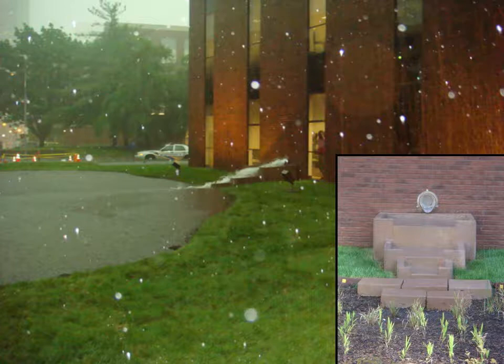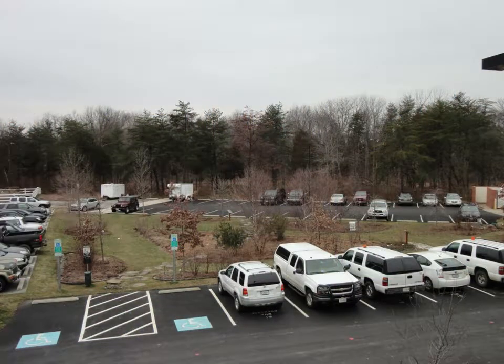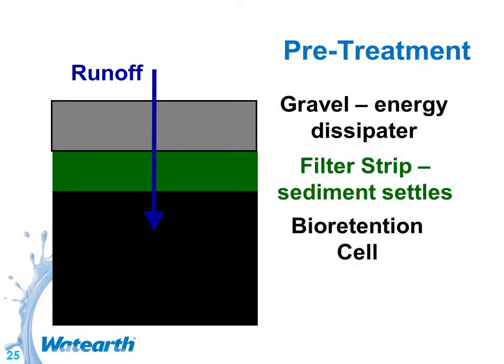We'll zoom past some of this. This is an example in Northern Virginia at a consulting firm. We have asphalt on parking stalls, and then the parking lot overflows into a centralized bioretention area. Pre-treatment can be helpful for erosion control — it's not 100% required. If you use bioretention with mulch, the mulch serves as a pre-treatment layer, trapping sediment and other pollutants.